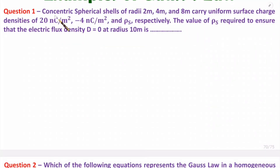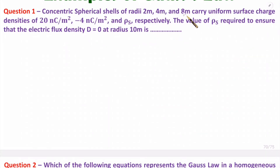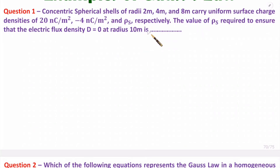In question one, concentric spherical shells of radius 2 meter, 4 meter, and 8 meter carry uniform surface charge densities of 20 nanocoulomb per meter square, minus 4 nanocoulomb per meter square, and ρs respectively. We have three different spheres with given surface charge densities. The value of ρs required to ensure that the electric flux density D equals zero at 10 meter is what we need to find.